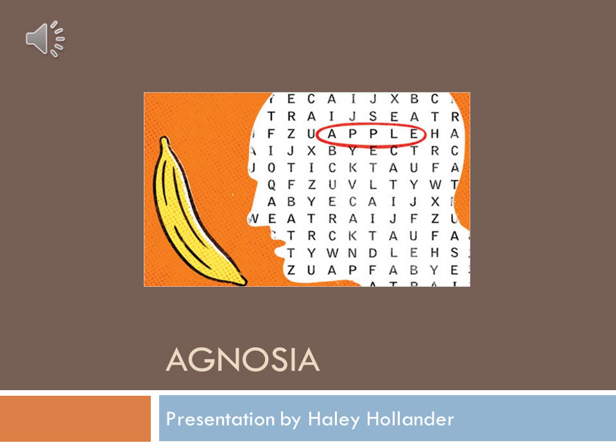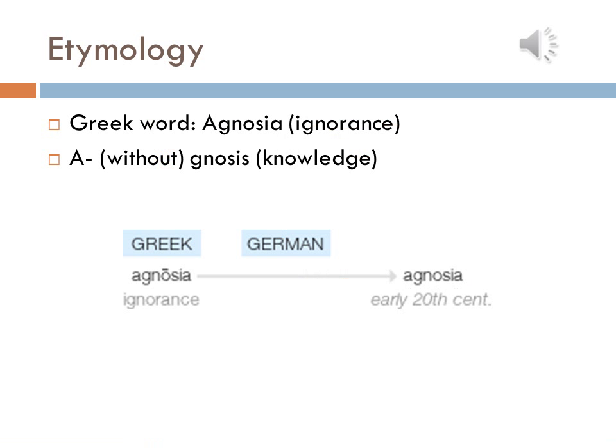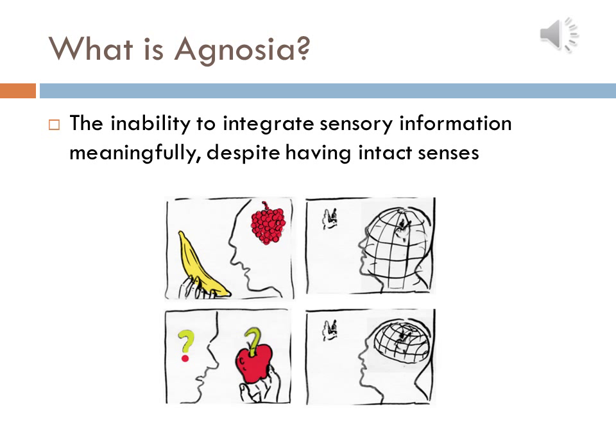Hello to everyone in Bio 33. This is my presentation on a unique and fascinating class of disorders known as Ignatia. The word Ignatia comes from the Greek word egnousia, meaning ignorance or without knowledge. Ignatia is a general term used to describe any disorder which impedes one's ability to recognize or interpret sensory stimuli, despite having perfectly functional senses.